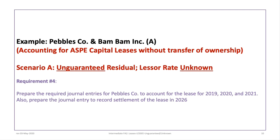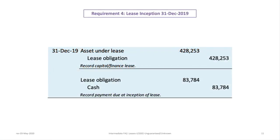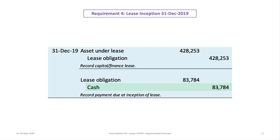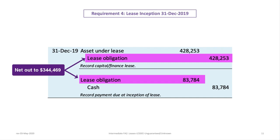Requirement 4 asks us to prepare journal entries for Pebbles Company for years 2019, 2020, and 2021, and also for lease settlement in 2026. Pebbles enters the lease on December 31, 2019: debit asset under lease for $428,253 and credit lease obligation liability for the same amount. Simultaneously, the first payment of $83,784 is made, all going against lease amortization — debit lease obligation and credit cash for $83,784, or net the two lease obligation entries to credit $344,469.